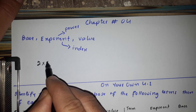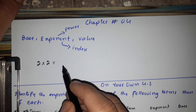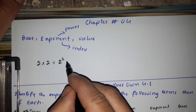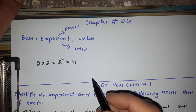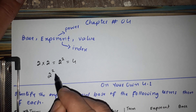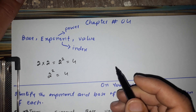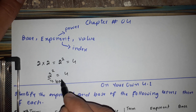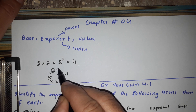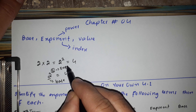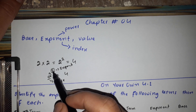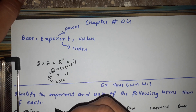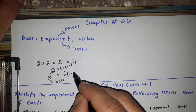For example, 2 × 2 × 2. We take the two, so two to the power of 2, as in 2 × 2, and the answer is 4. The base is the base, the base is the exponent, the exponent is the index, the power is the power, and the answer is the value.